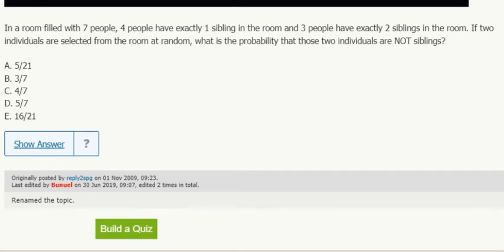Okay, so first of all, how are these people related? You have four people that have exactly one sibling. So that means two different pairs. These are a sibling pair, and these two are a sibling pair. That's four people. Each of them only has exactly one sibling.